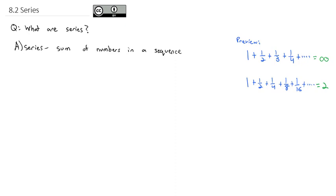For our purposes, we're not going to add up an infinite number of numbers. We're just going to look at how we can add up a series of a finite number of elements. To set this up, I'm going to talk about what is called sigma notation. Sigma notation looks something like this — we'll have the Greek letter sigma, a capital letter sigma.